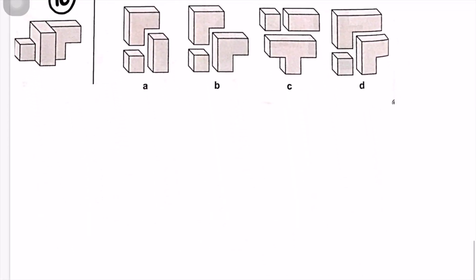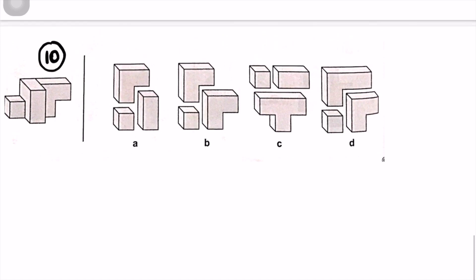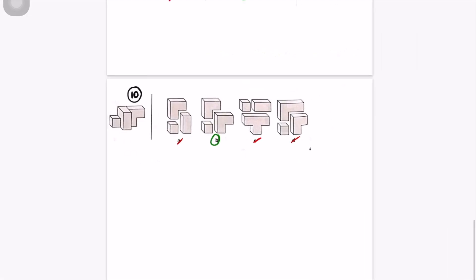Finally, question number ten: we can already see two L-shaped pieces — one L-shape here and one other L-shape here. I'm going to eliminate anything that doesn't have two L-shapes, so I eliminate D, C, and the remaining non-matching option. We're automatically left with B. This L-shape is that one there, this L-shape is that one here, and this cube is that one here. So the answer is B.